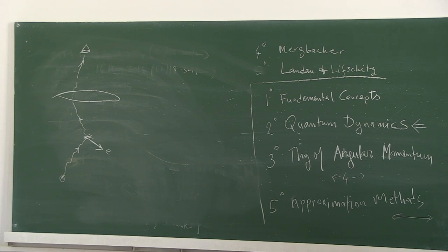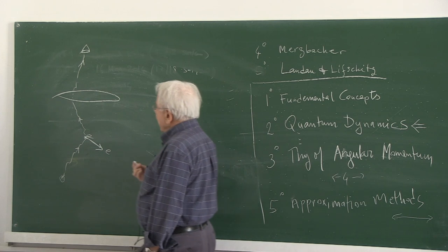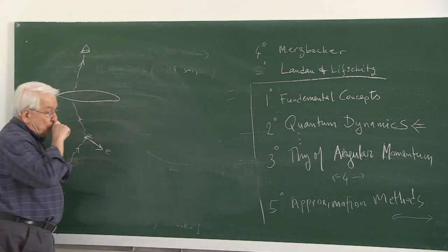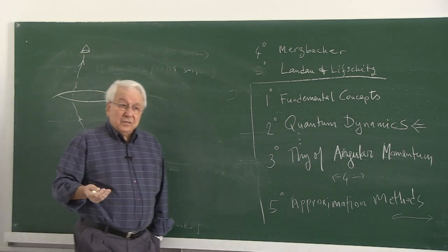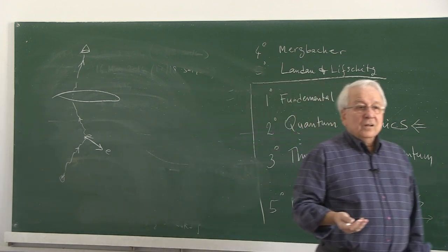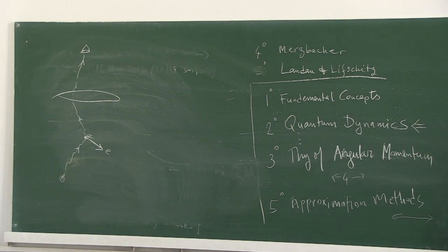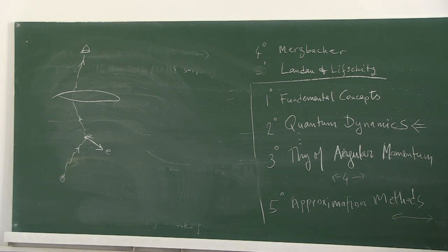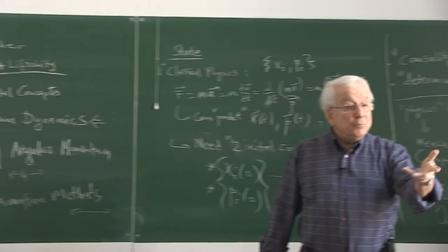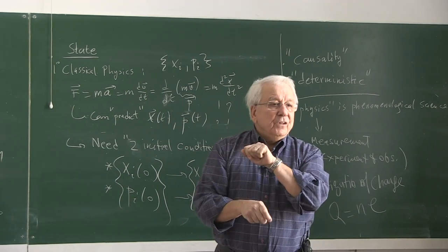Does it change the system? Of course it changes. Because when it scatters, the electron recoils and it's not in the same position as before. Has the state of the system changed? Yes, the state of the system has changed. If the state is this pair of coordinates and momenta, this pair is not the same as before the measurement — because you intervened.